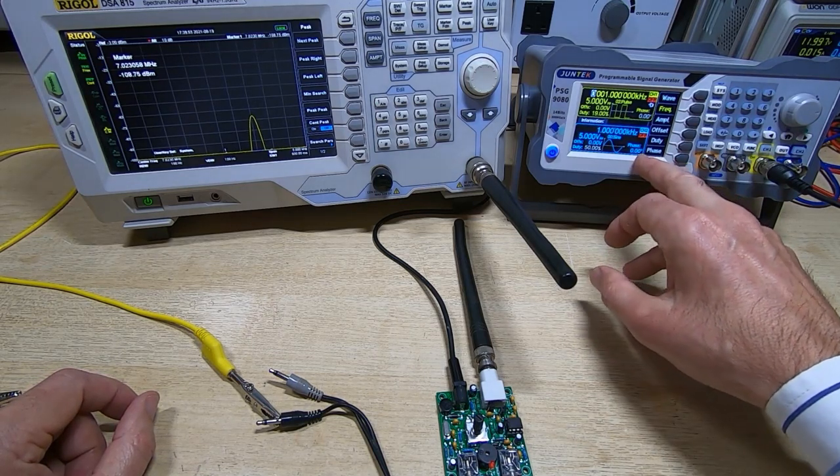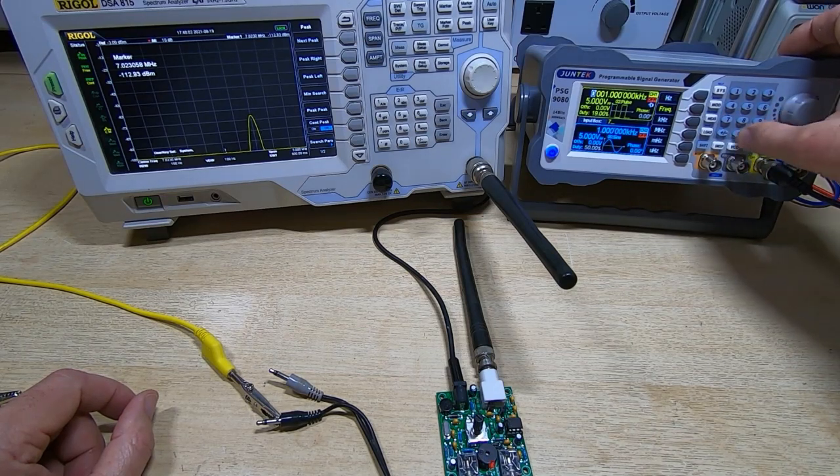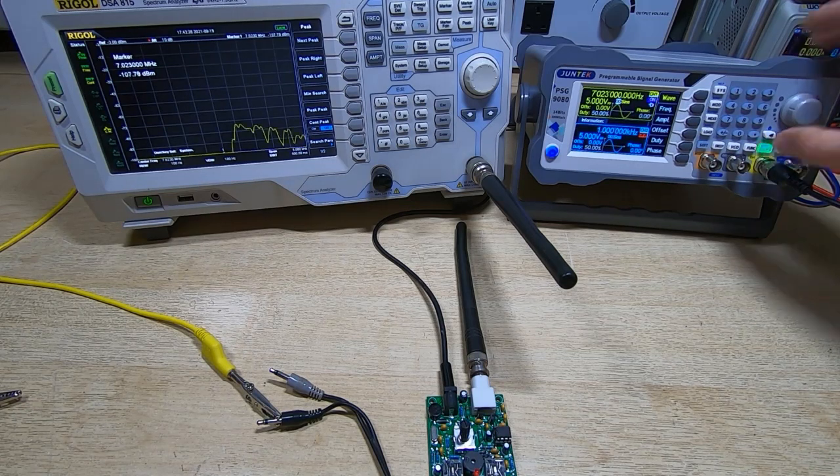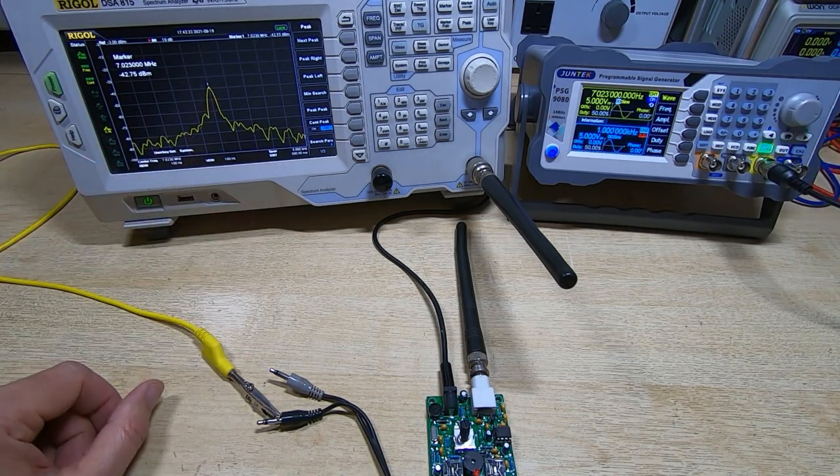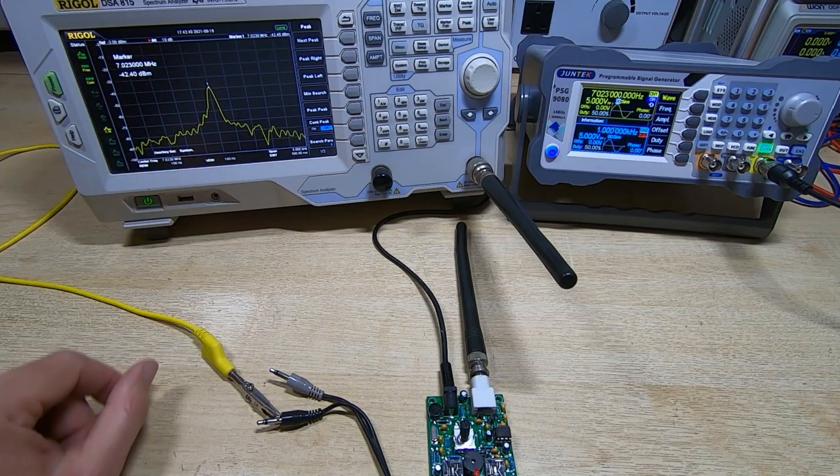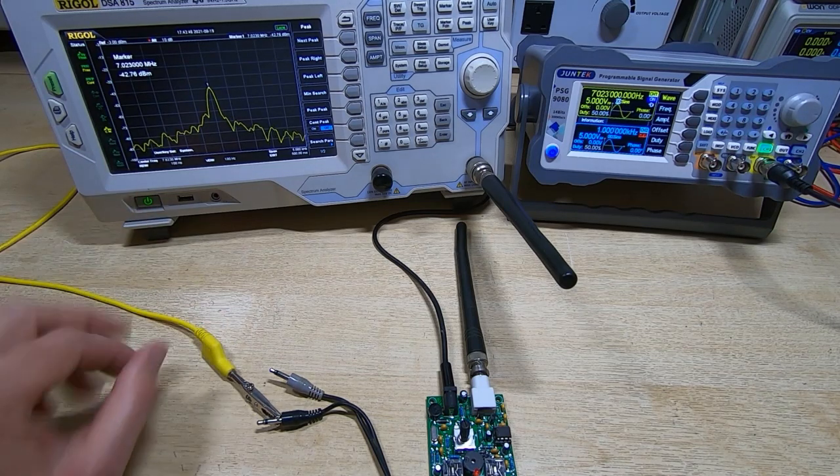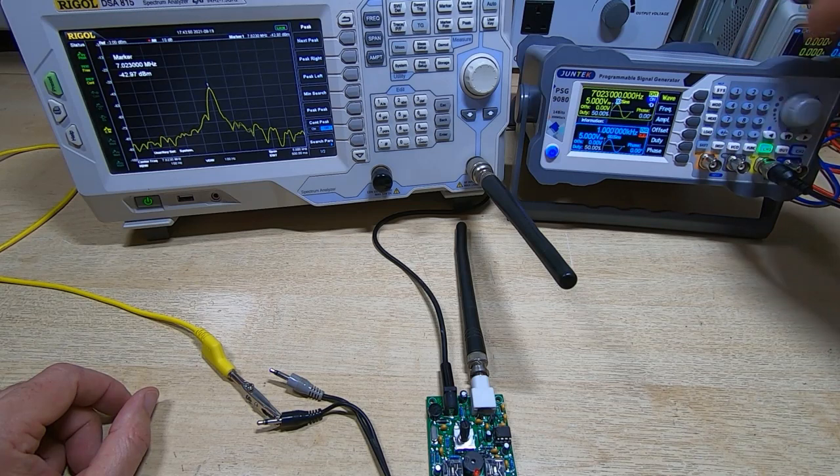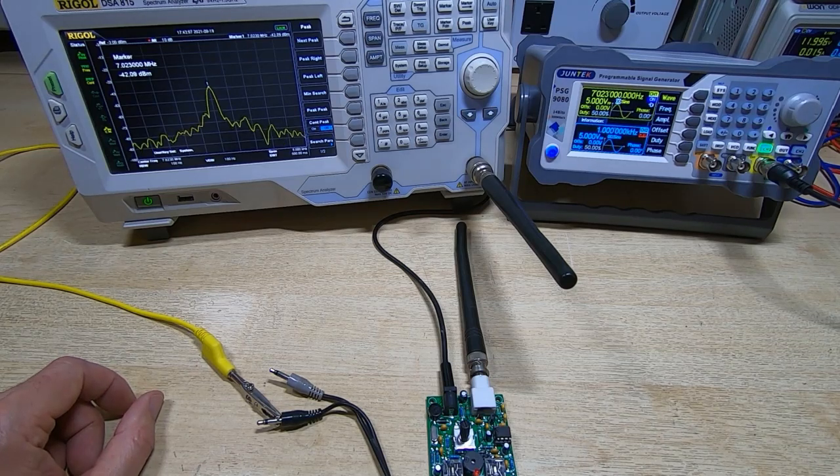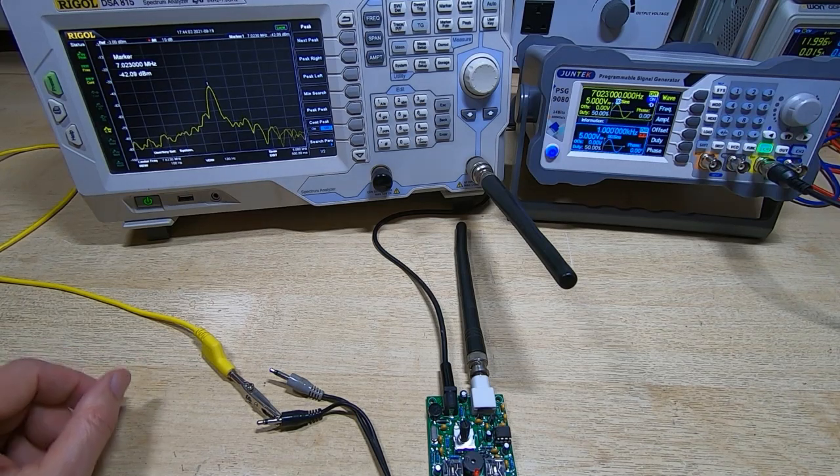We'll now power up the Juntek and we'll get it set up to the correct frequency of operation so we'll set this to 7.023 megahertz. We'll switch on the Juntek and we can now see the carrier in effect that we are transmitting from our sending station and it's at exactly 7.023 megahertz. If you're interested it's coming through at minus 42 dB but that's kind of irrelevant as I said the Juntek is just connected to a length of wire. We now turn on our transceiver. Not much has changed and we can't hear anything coming out of the earpiece.